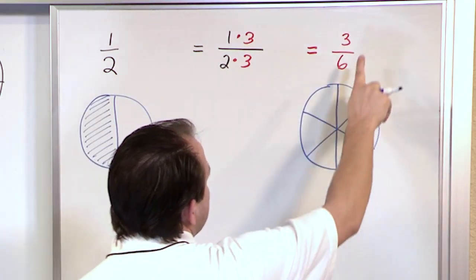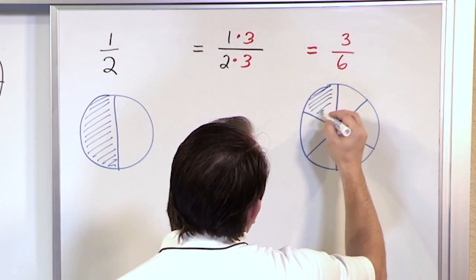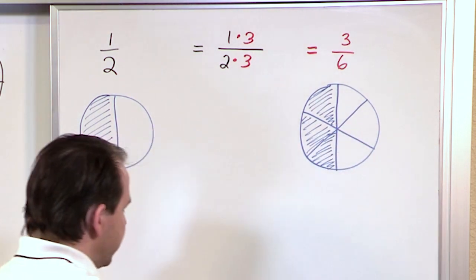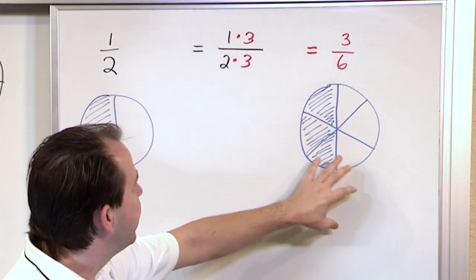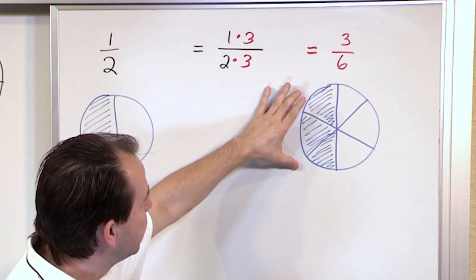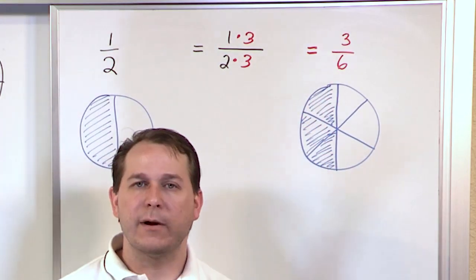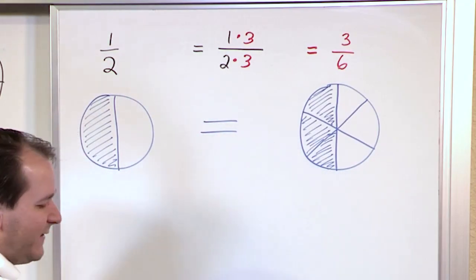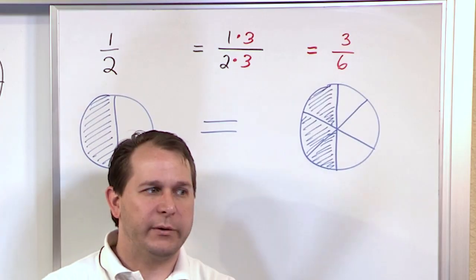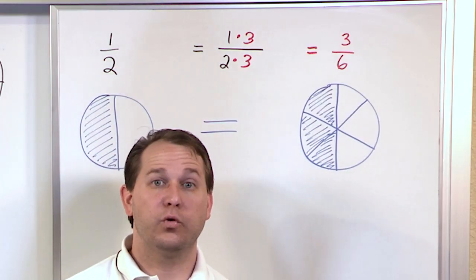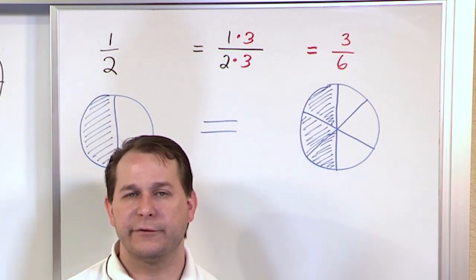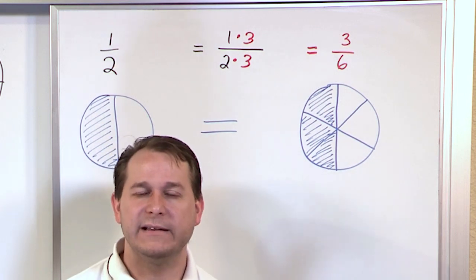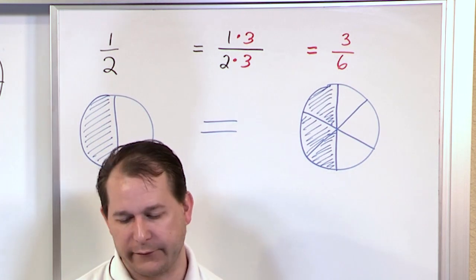I'm only actually having 3 of these pieces — here's a piece, here's a piece, and here's a piece. And I think you can see, by comparing these two fractions, that this is actually half of the pizza. Even though it's 3 pieces out of 6, it represents the exact same thing as 1 piece out of 2. You can't always tell just by reading the numbers whether fractions are equal — sometimes they look different but represent the exact same amount.